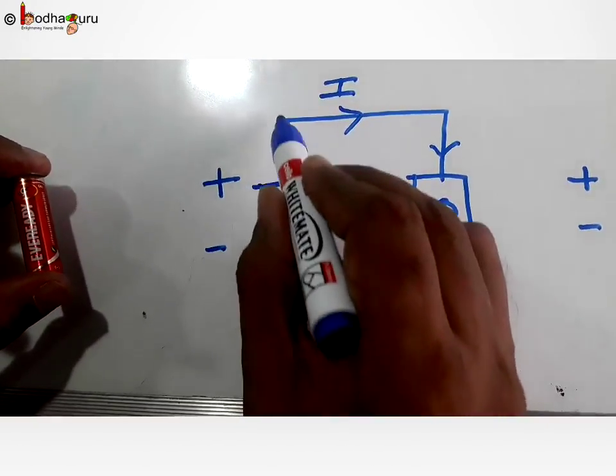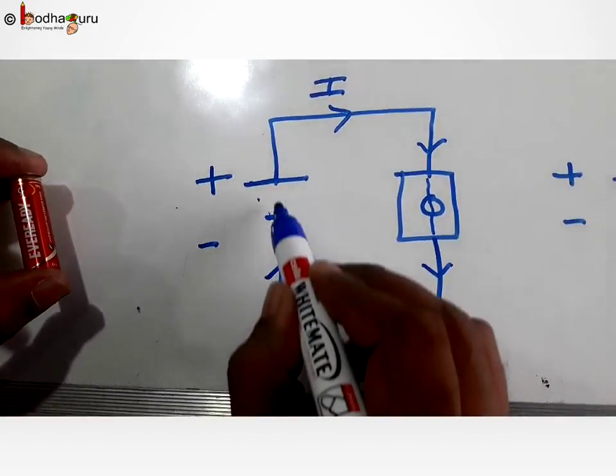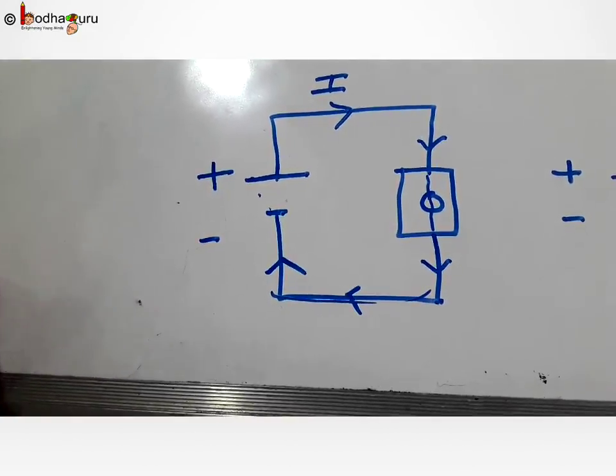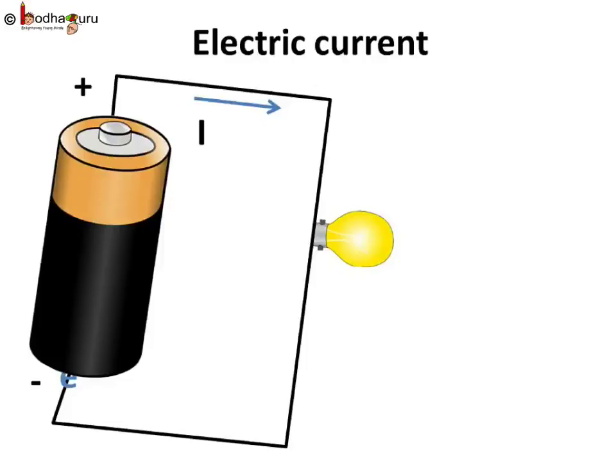We call electric current flowing from high potential to lower potential. And to maintain this flow of electrons in the circuit, the cell has to expend its energy. That is chemical energy is converted to electrical energy, which in turn causes the electrons to move. That is current to flow through the circuit.